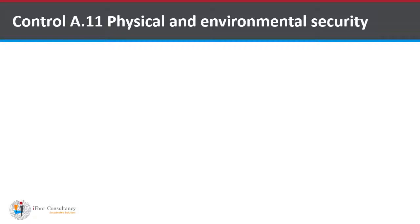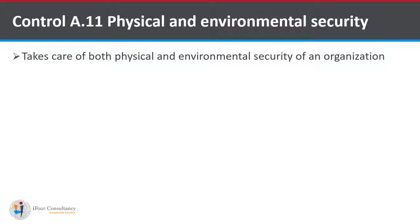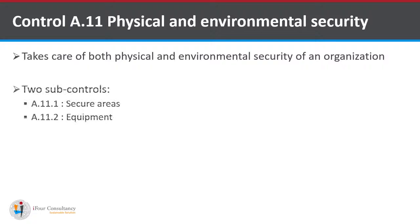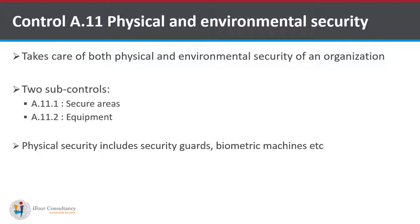First, I am going to explain Control A.11, that is Physical and Environmental Security. This control takes care of both physical and environmental security of an organization. Control A.11 has two sub-controls: first, A.11.1 that is Secure Areas, and second, A.11.2 that is Equipment. Sub-control A.11.1 will be explained in this presentation and sub-control A.11.2 will be explained in the next presentation of this ISO series.